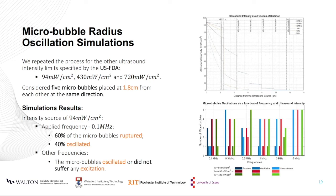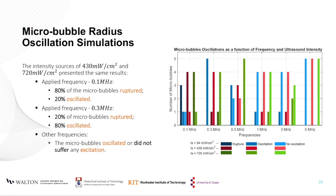We performed the same simulation process considering the ultrasound intensity of the source following the specified limits by the FDA, and placed 5 microbubbles into the lungs at 1.8 cm of distance from each other in the same direction. The results show that for an ultrasound intensity of 94 mW per square centimeter, when the frequency applied was 0.1 MHz, 60% of the microbubbles ruptured and 40% oscillated. For the remaining tested frequencies, the microbubbles oscillated or didn't suffer any excitation. For ultrasound intensities of 430 and 720 mW per square centimeter, when the applied frequency was 0.1 MHz, 80% of the microbubbles ruptured and 20% oscillated. At 0.3 MHz, 20% ruptured and 80% oscillated, and for all other frequencies, the microbubbles oscillated or didn't suffer any excitation.